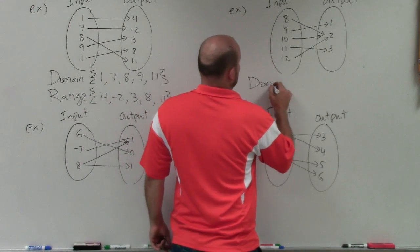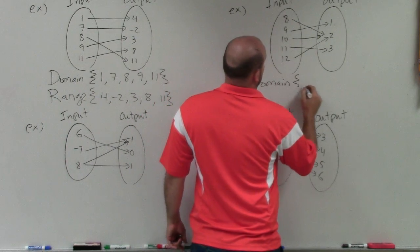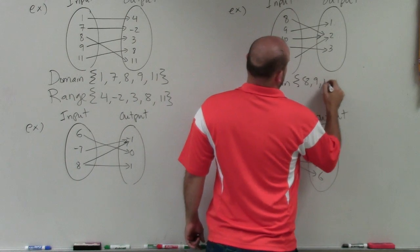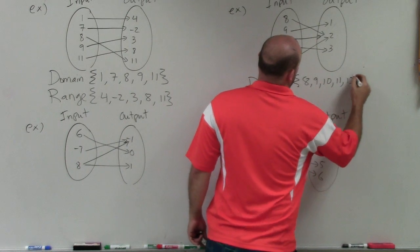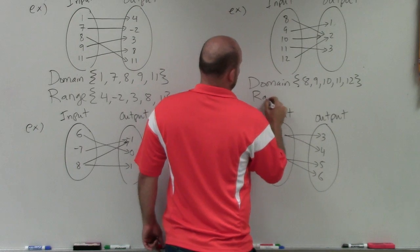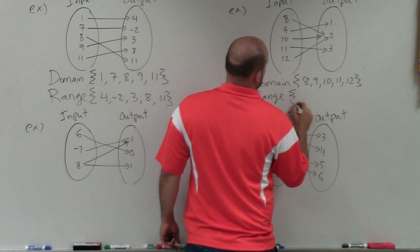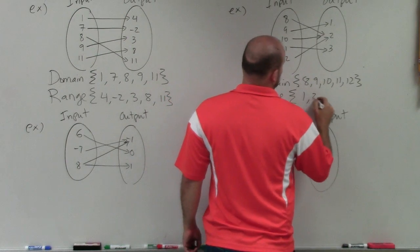I'll write my domain as 8, 9, 10, 11, 12. And my range, I'll write as 1, 2, 3.